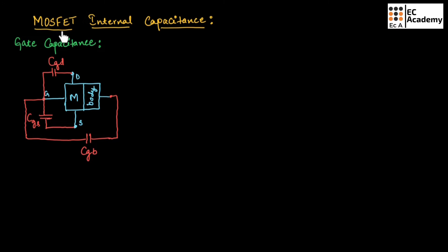If we consider a MOSFET, it can have two types of capacitances. The first one is external capacitance and the second one is internal capacitance. In external capacitance, there are two types: coupling capacitor and bypass capacitor. In case of internal capacitance, there are two types: gate capacitance and junction capacitance. In this lecture, let us understand gate capacitance and junction capacitance.